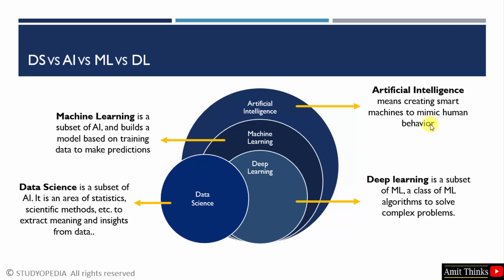AI is mostly used in healthcare, finance, transportation, and entertainment fields. Machine learning is a subset of artificial intelligence. It is used to build a model based on training data to make predictions — for example, to predict the winner of a World Cup.